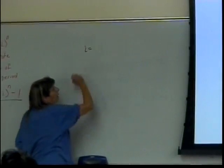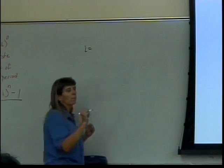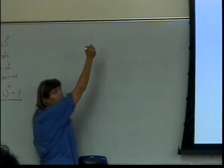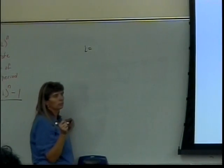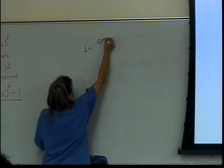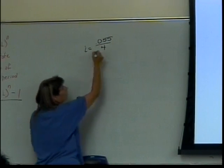So what's the periodic rate for my problem of 5.5% compounded quarterly? What would that be? 0.055 divided by four, because it's compounded quarterly.